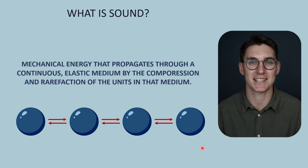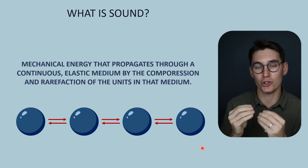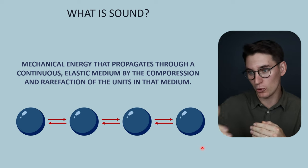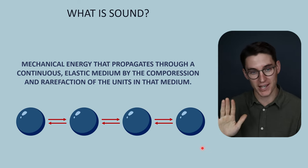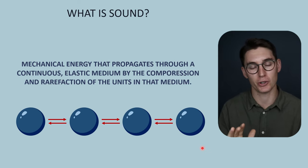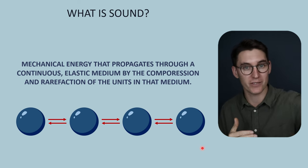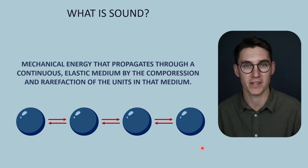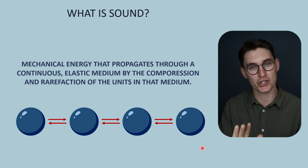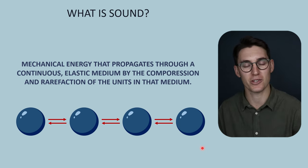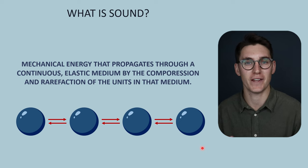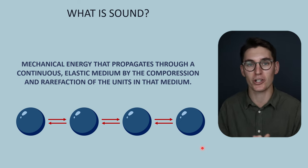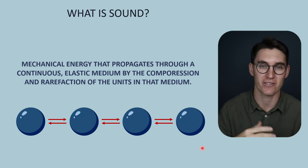The medium also needs to be elastic. The molecules within that medium need to be able to move, transfer energy, and return back to where they started. If I push water, the molecules I initially pushed will return to where they were and a wave will propagate through the water. If I push a pile of sand, a wave wouldn't propagate — the sand wouldn't return to its resting place and we wouldn't get that transfer of energy. Sand has no elasticity, and in later talks we'll look at the elastic and inertial properties of a medium and how they affect wave speed.